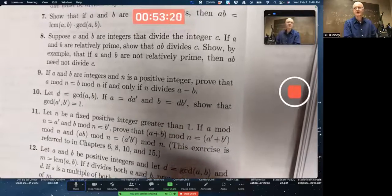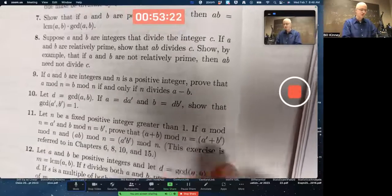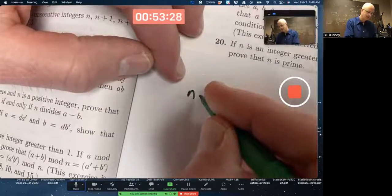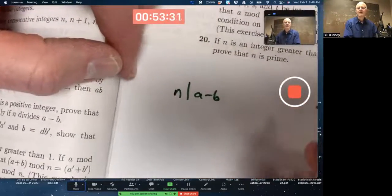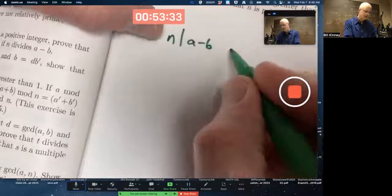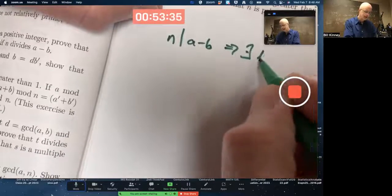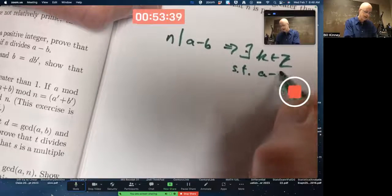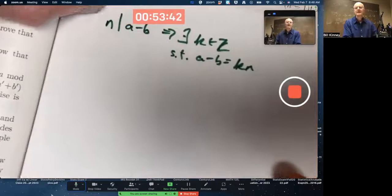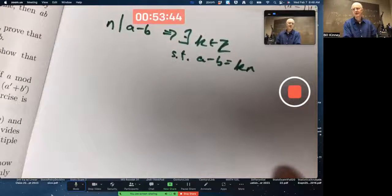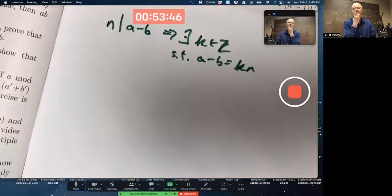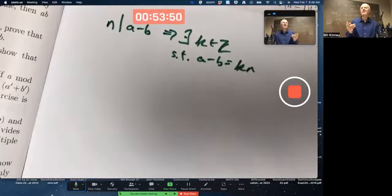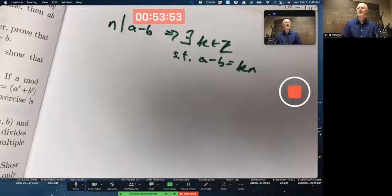The other direction is harder. Assume N divides A minus B. So, there exists a K, an integer K, such that A minus B equals K times N. Somehow, we have to use this equation, the truth of this equation, to show that the remainders of what we get when we divide A by N and B by N are the same.